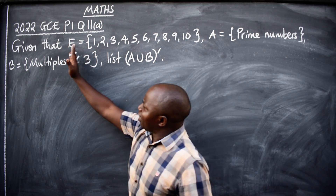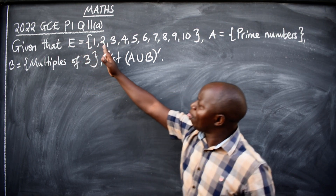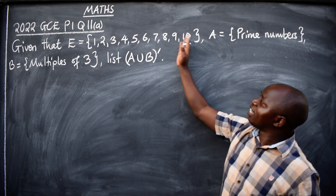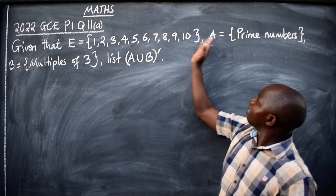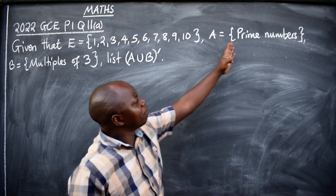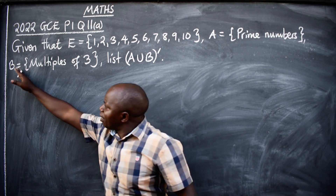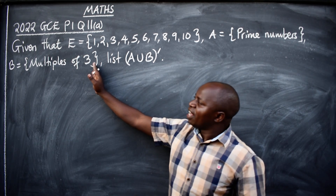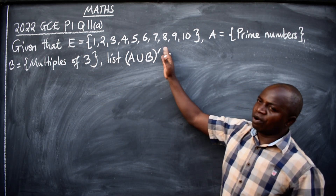Given that E, or universal, is equal to {1, 2, 3, 4, 5, 6, 7, 8, 9, 10} — that is the universal set. Set A is equal to prime numbers. We also have Set B, which is equal to multiples of 3. The question is: list A union B complement.